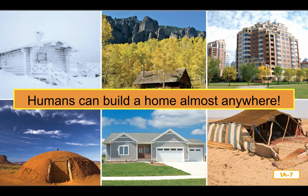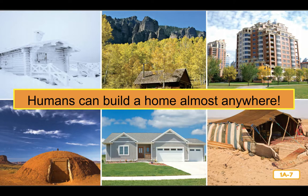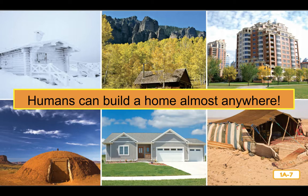Most animals have to live in habitats that are specific to them, but you human beings are very clever. You can build habitats for yourselves. If you want to live in the desert where there isn't much water to grow food or to drink, you can build a pipeline to bring water for crops or for drinking. You can have food transported to the desert by road or by rail. And you can build houses for shelter, so you don't need to sleep in the sand. People have been able to live in extremely hot, cold, and dry places. Humans can build a home almost anywhere.